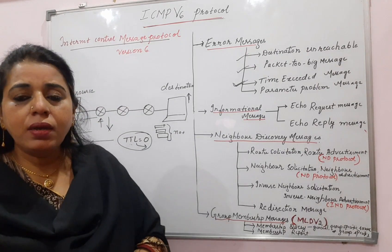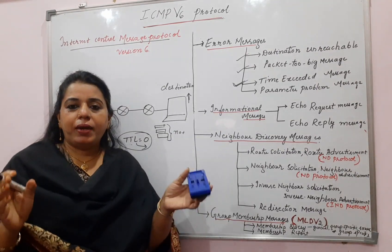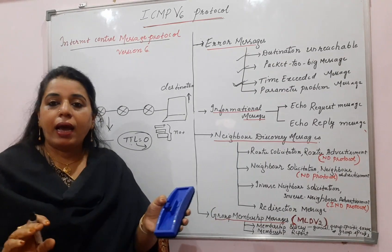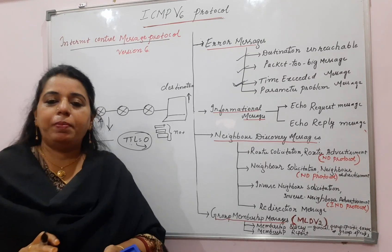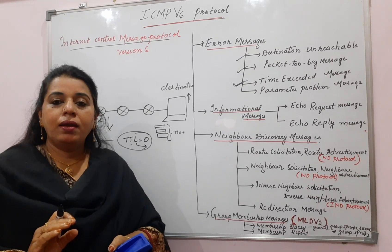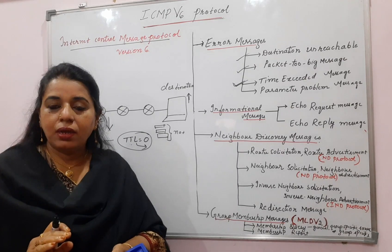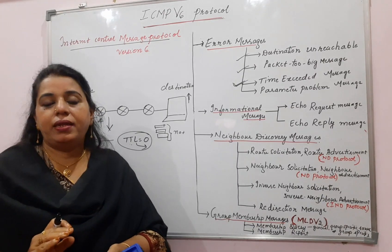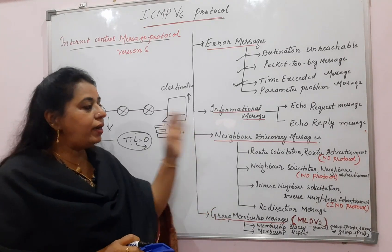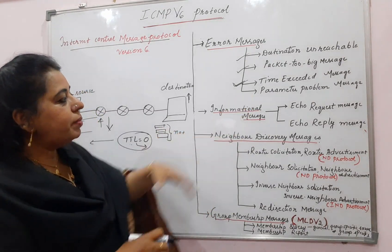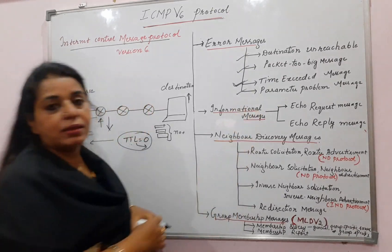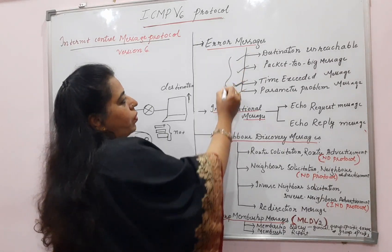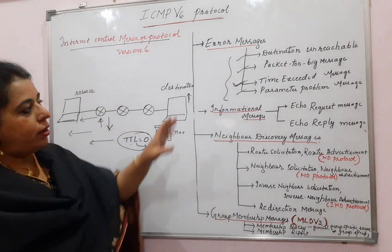The parameter problem message was also present in ICMPv4. In the IPv6 or IPv4 header, the different fields have certain values. If there is any ambiguity in any field of the header, or if any value in the header is missing, this message is generated. We call it the parameter problem message, and it has to get reported to the source host. These are the four different types under the error messages category.